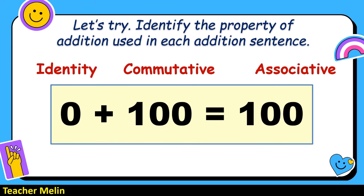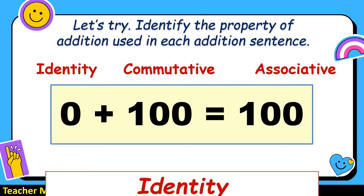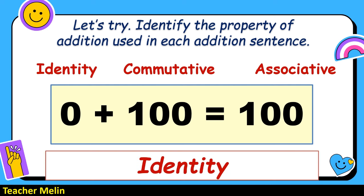How about 0 plus 100 equals 100? The correct answer is identity — this is an identity property of addition.